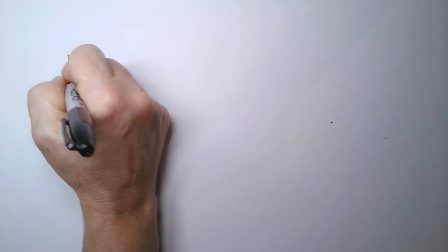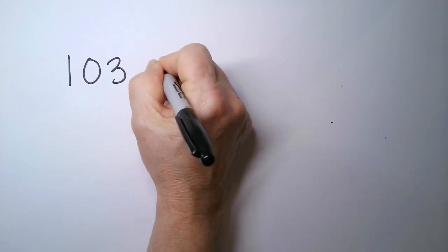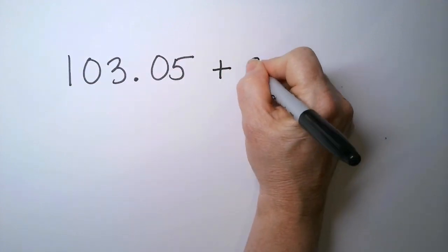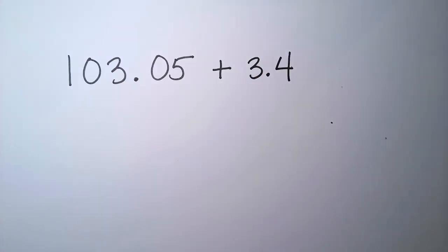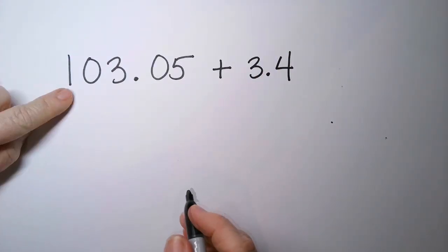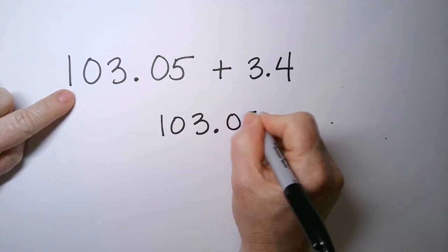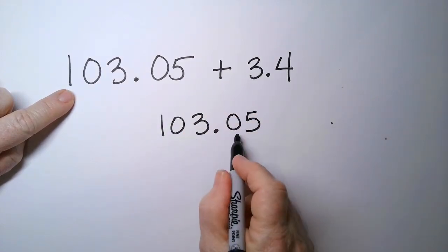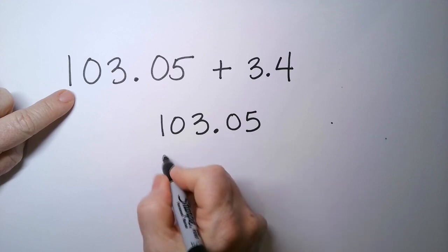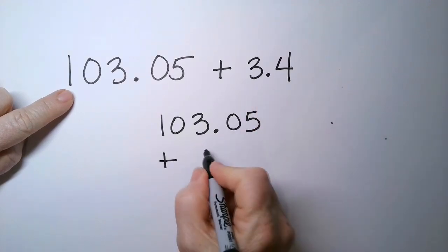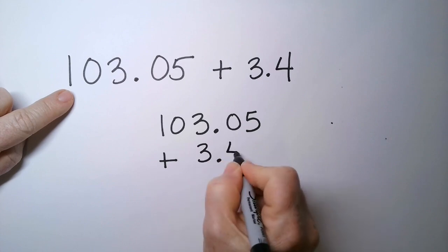How about an example like this? 103.05 plus 3.4. So write it vertically. So 103.05, so 103 and 5 hundredths, plus 3.4, so 3 and 4 tenths.